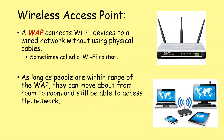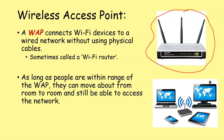Now we move on to the wireless access point. A WAP connects wi-fi devices to a wired network without using physical cables. Sometimes we talk about this as a wireless router or wi-fi router, but we'll refer to it as a wireless access point so we don't get mixed up with an actual router. You might see these at home, at schools, and offices — they've got antennas for sending and receiving radio signals. As long as people are within range of the WAP, they can move around from room to room and still access the network.